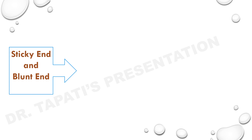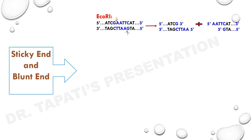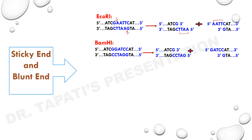When restriction endonucleases cut the strand a little away from the center of palindrome sites but between the same two bases on the opposite strands, this leaves single-stranded overhanging stretches at the ends — these are known as sticky ends. EcoRI recognizes GAATTC and cuts between G and A, producing overhanging stretches known as sticky ends at the 5' ends. Another example is BamHI, whose recognition site is GGATCC; it cuts between GG and produces 5' overhangs — that is, 5' sticky ends.